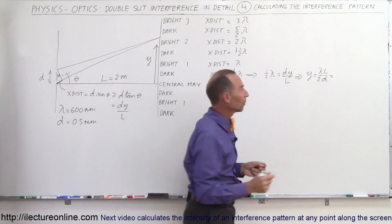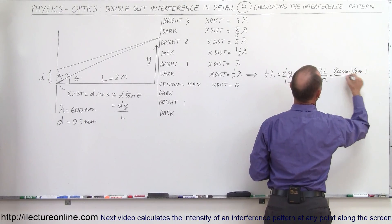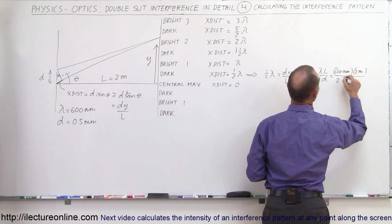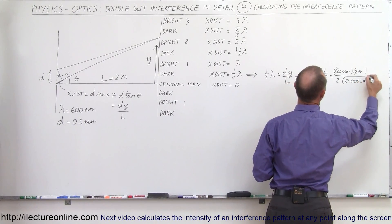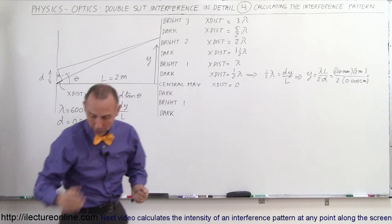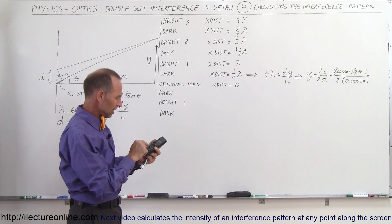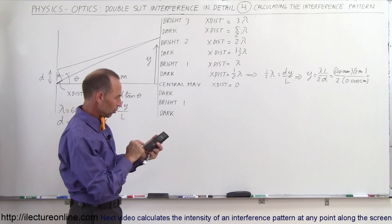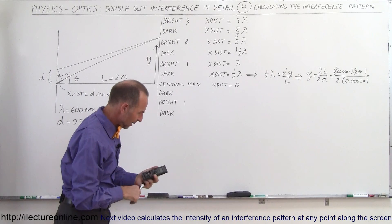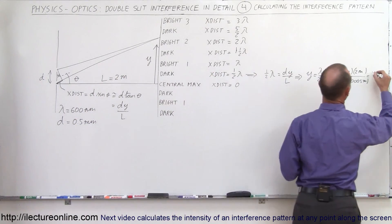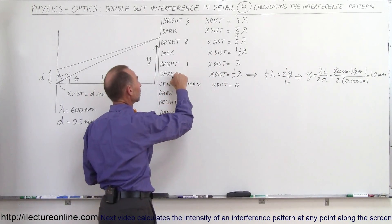We set one-half lambda equal to dy over L, and solving for y gives us y equals lambda·L divided by 2d. Plugging in the numbers: lambda is 600 nanometers, L is 2 meters, and d is 0.0005 meters. That gives us the location of the first dark spot. Calculating: 600×10⁻⁹ times 2 divided by 2 times 0.0005 equals 1.2 millimeters. So 1.2 millimeters away from the central maximum, we find our first dark spot.